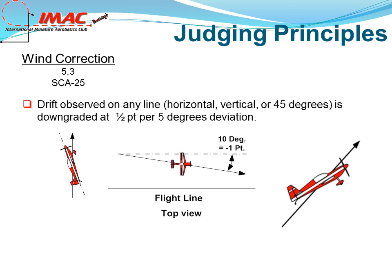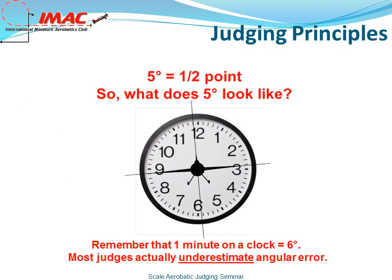45-degree lines must track on a true 45. Drift observed on any line — horizontal, vertical, or 45 degrees — is downgraded at a half a point per 5 degrees of deviation. 5 degrees equals a half a point. So what does 5 degrees look like? Remember that one minute on a clock is 6 degrees. Most judges actually underestimate angular error.